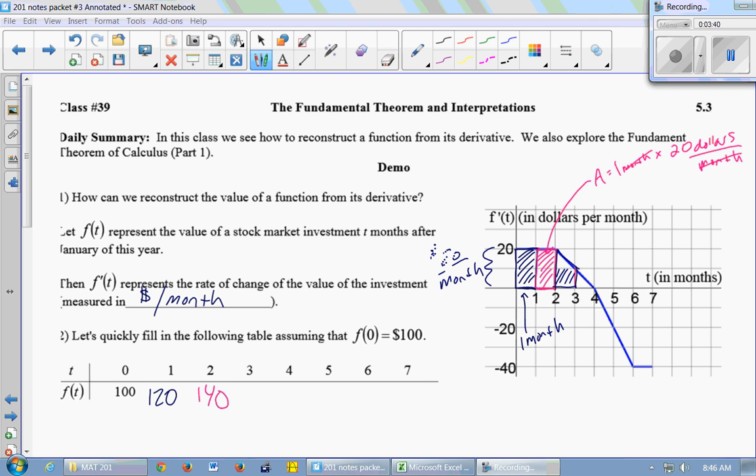And then this is a triangle, which is 1/2 of 1 by 10, so it's 5. So this area is positive $15. So if we started at $140, the area under the curve tells me that my investment changed by a value of $15. So I'm now at $155.